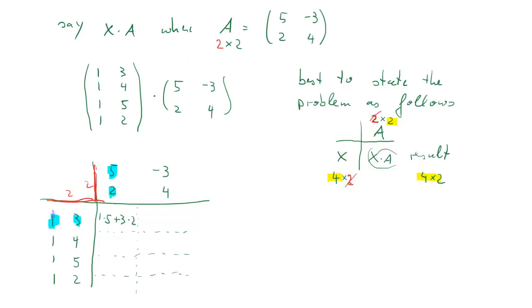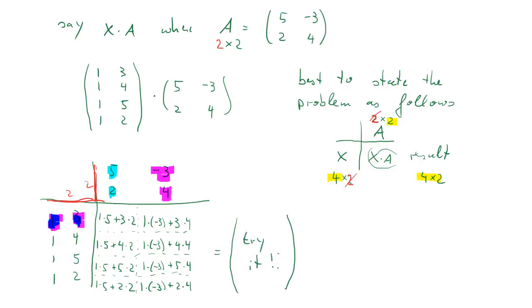The next element, the 1,2 element, is going to use the first row of X and the second column of A. So again, we take the product of the first elements, 1 times negative 3, and the product of the second element, 3 times 4. And all the remaining elements will be calculated accordingly. They're all combinations of rows of X and columns of A. So you'll have to ensure that you understand what each of these detailed calculations are. I suggest you find the pause button and find the final result for this.